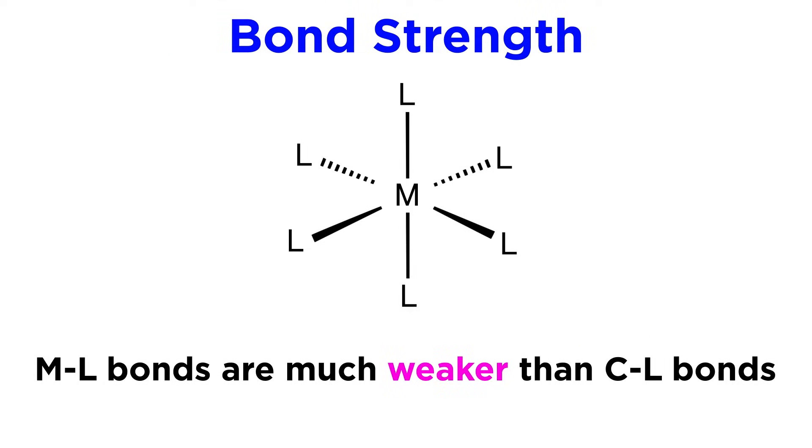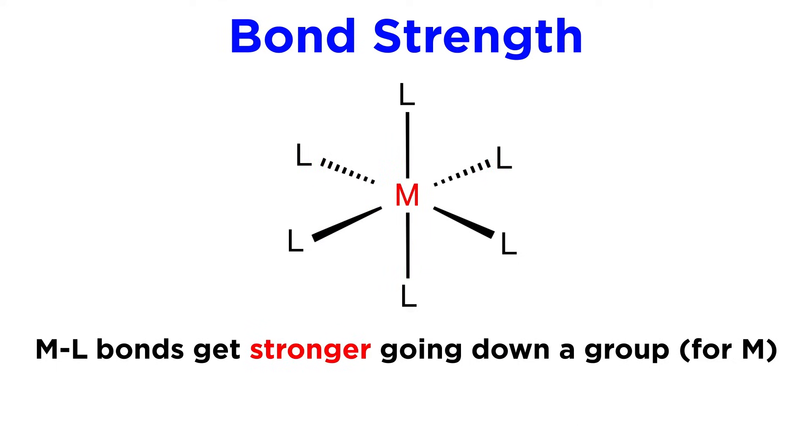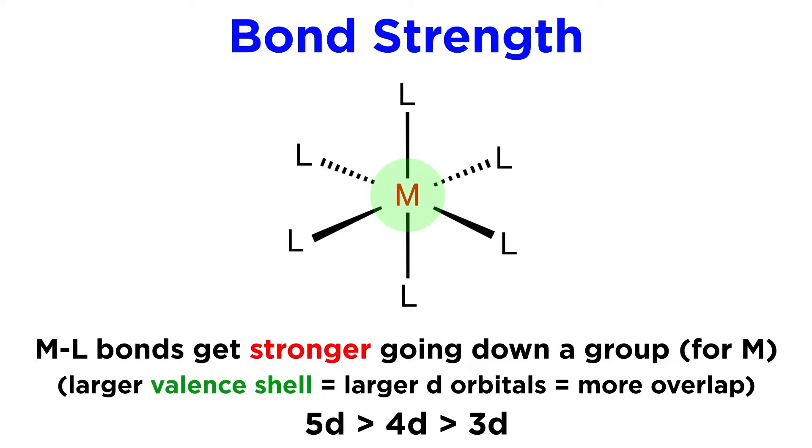Now there is a bit to talk about in terms of metal ligand bond strength. First of all, these bonds are much weaker than those between carbon and these same ligands. They have much lower bond dissociation energies. That's what makes the ligands fairly easy to replace, and the more easily they are displaced, the more labile we can say they are. But generally speaking, these bonds get stronger going down a group. Most likely because as the valence shells get larger, the d-orbitals on the metal extend farther into space, allowing for more overlap. So 5d metals make stronger bonds than 4d, which are stronger than 3d.